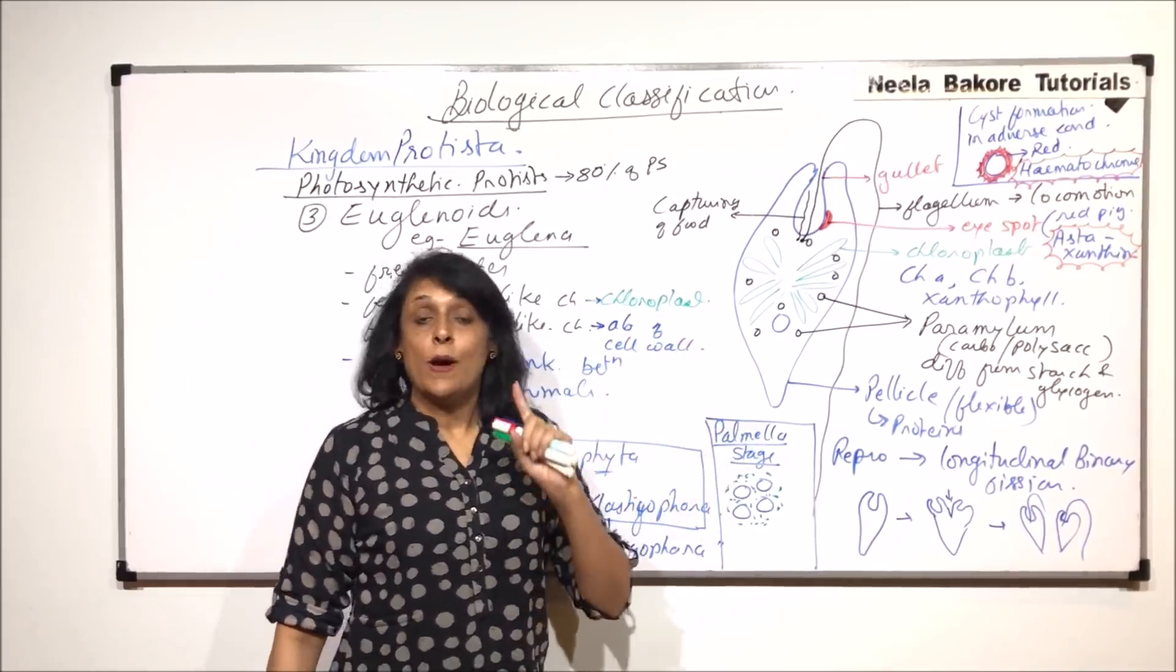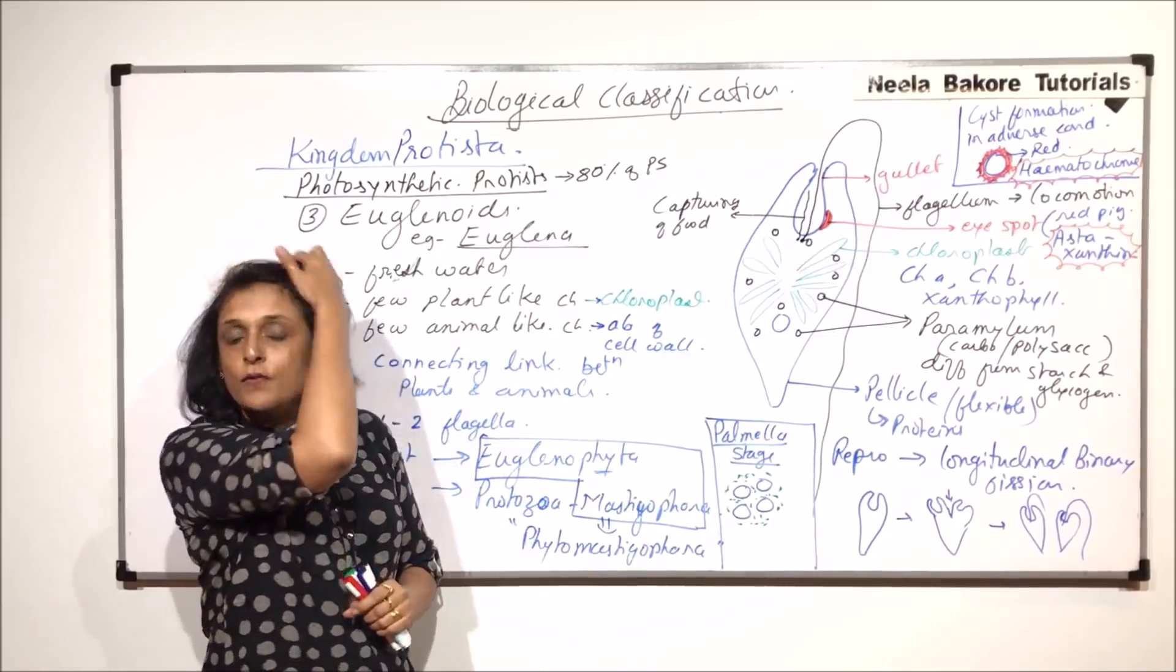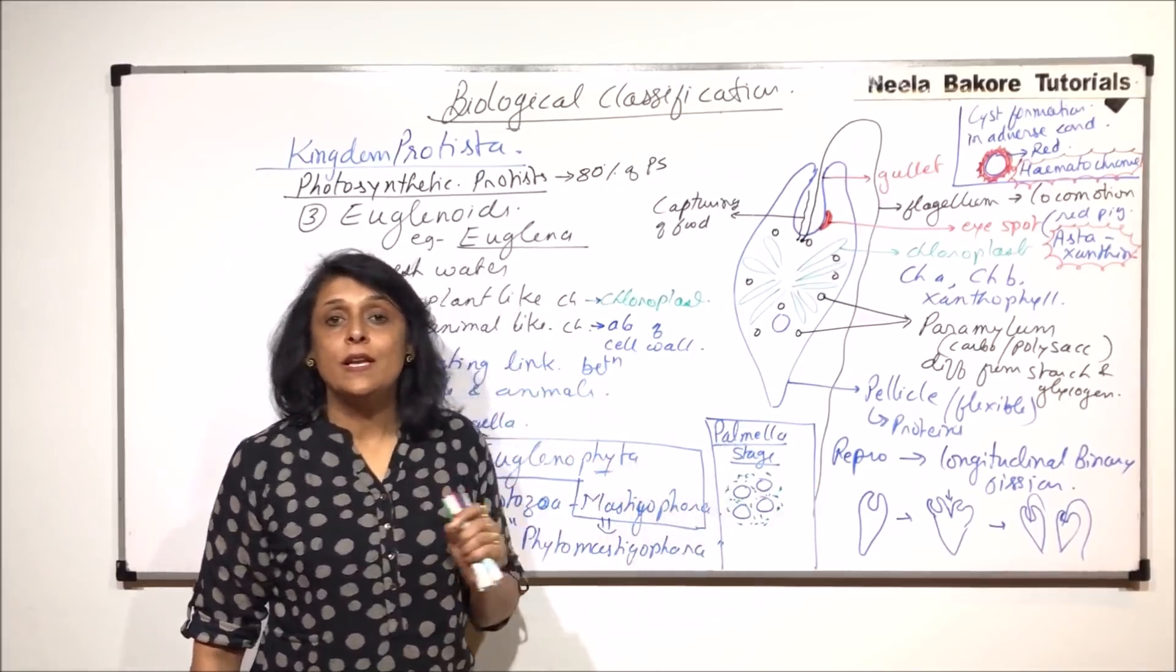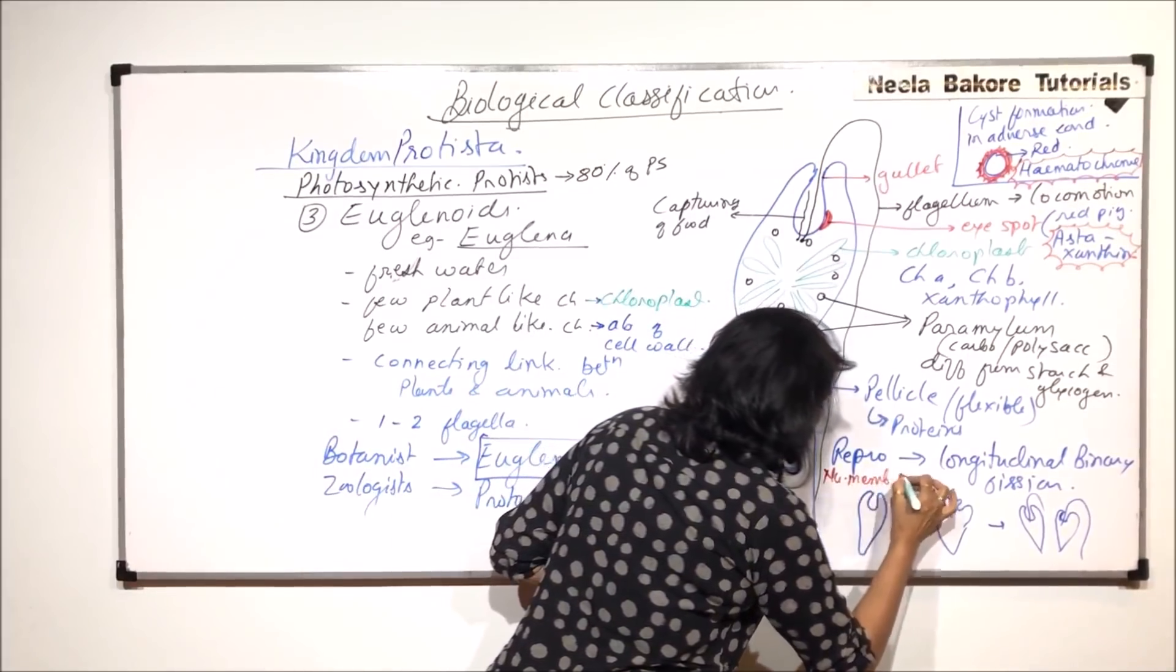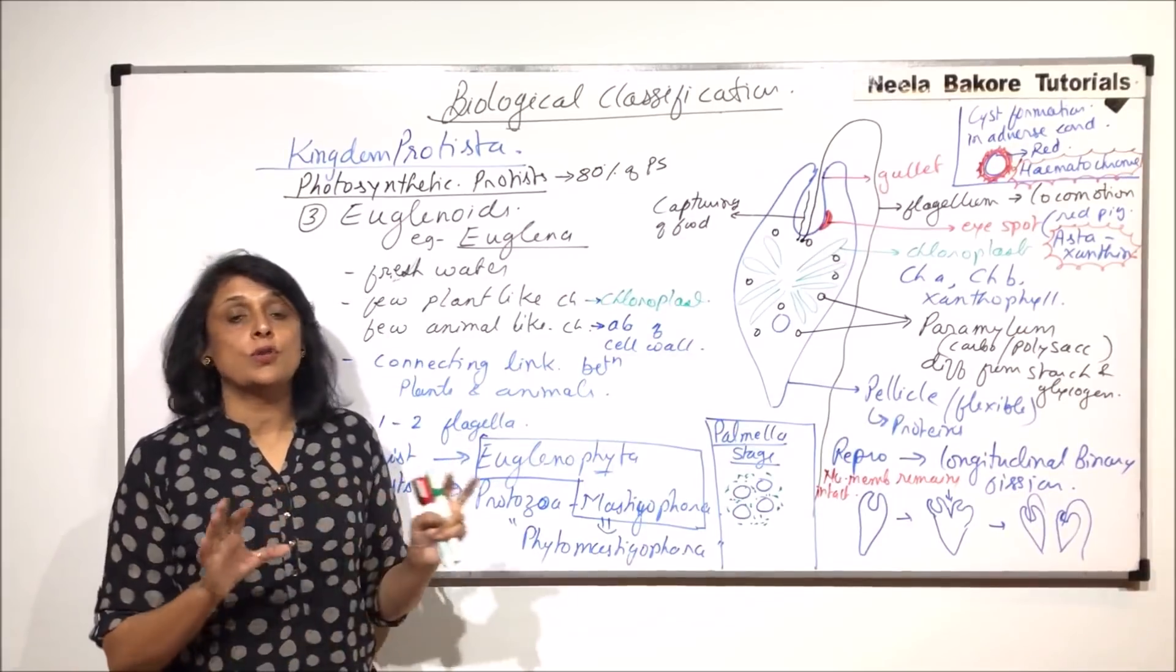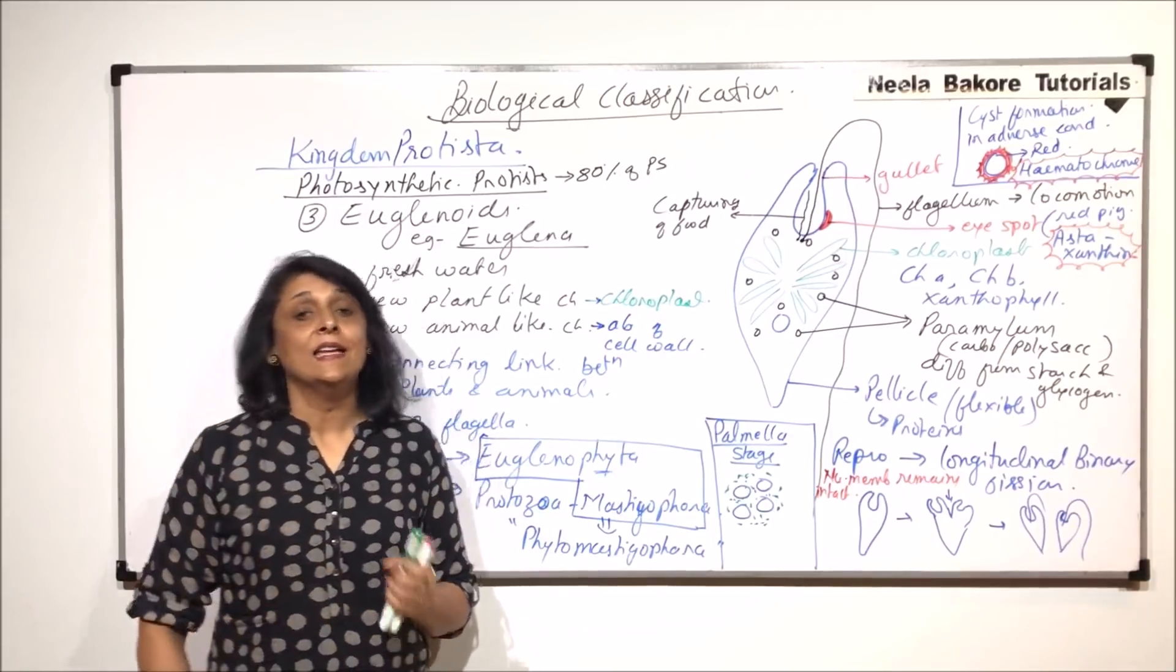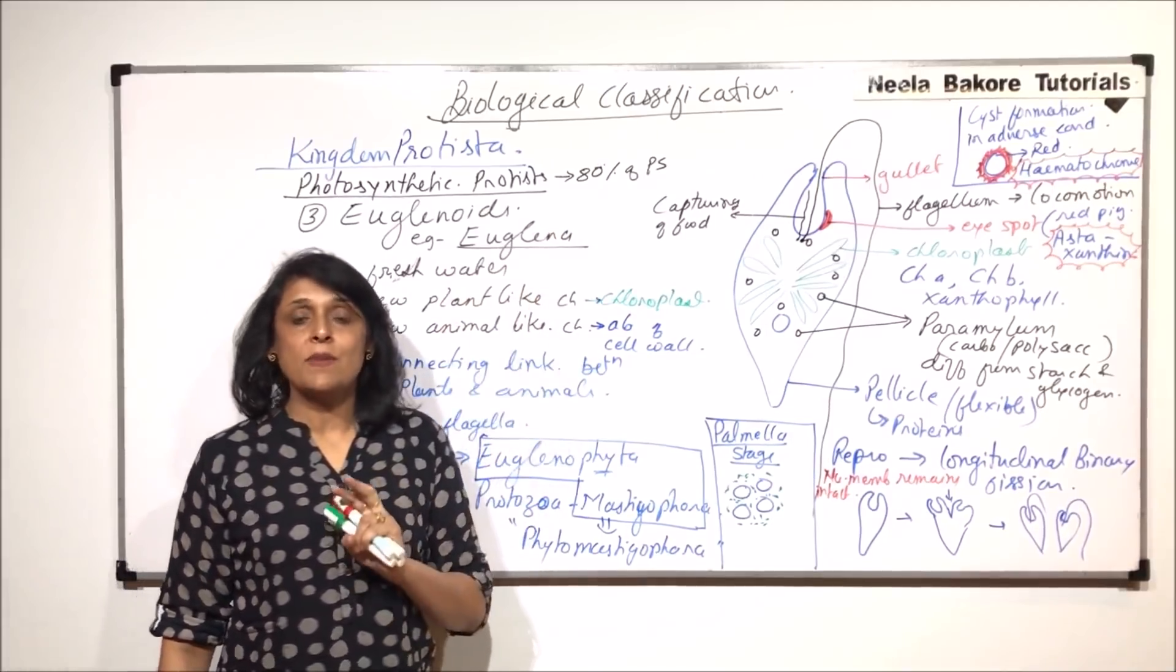One more important thing about reproduction. Normally, when we talk of reproduction by mitosis, the nuclear membrane or nuclear envelope dissociates. In case of euglenoids, the nuclear membrane remains intact during division. There is no dissociation of nuclear membrane. The nucleus splits into two and whatever chromosome separation takes place happens inside the nucleus.